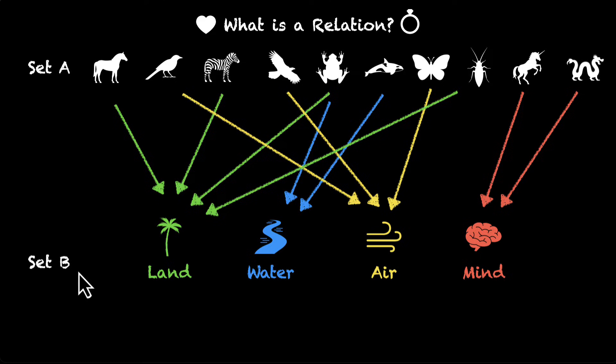Because Cartesian products have all possible combinations. So that means a relation is a subset of a Cartesian product. That's the simplest definition that I could find. A relation is a subset of a Cartesian product. That's it.